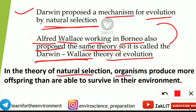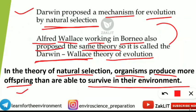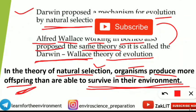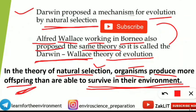In the theory of natural selection, organisms produce more offspring than are able to survive in their environment. The environment can only support a certain number of individuals, but more offspring are produced than that capacity allows. This concludes today's video. If you found it useful, give a thumbs up, subscribe for further updates, and keep smiling and believing in yourself.